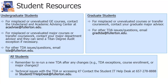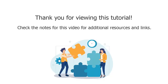All students should remember to re-run a new TDA after any changes, such as TDA exceptions, course enrollment, or major changes. If you experience technical issues with the TDA or accessing it, contact the Student IT Help Desk at 657-278-8888 or studentithelp@fullerton.edu. Thank you for viewing this tutorial. Additional resources and links are available in the notes for this video.